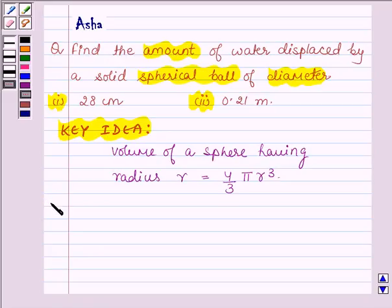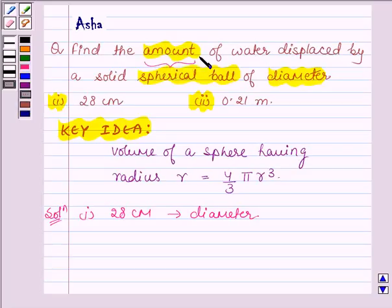Let us now start with the solution. First is 28 cm, the diameter of the ball given to us. Now we have to find the amount of water displaced by the solid spherical ball of diameter 28 cm. That is we have to find the volume of the ball having diameter 28 cm. So this implies radius is equal to 28 cm divided by 2, that is diameter upon 2, and this is equal to 14 cm.